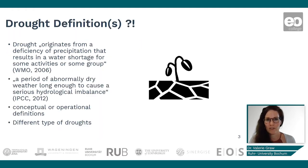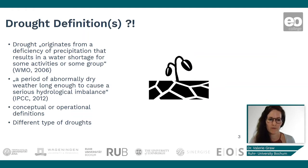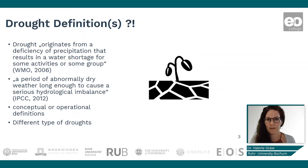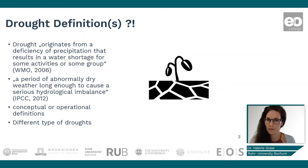There is not just one core definition of drought, although we find some definitions. According to the World Meteorological Organization, drought originates from a deficiency of precipitation that results in a water shortage for some activities or some groups. According to the IPCC, drought is defined as a period of abnormally dry weather long enough to cause a serious hydrological imbalance.